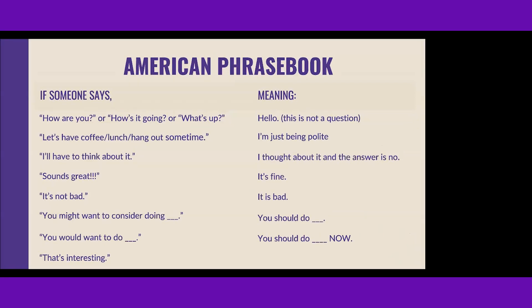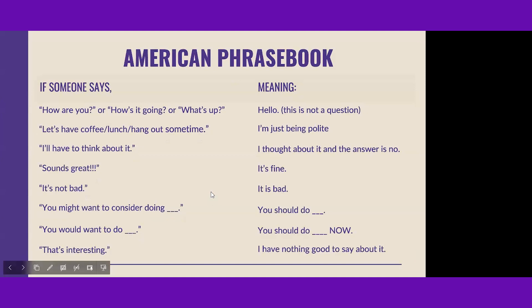The last phrase: 'That's interesting.' This is probably the most controversial one. Tone matters here — it matters for all of these. 'That's interesting' can mean it's not interesting, or it might mean I just don't know what to say. True confession: I've used it when I didn't hear the person and didn't want to ask them to repeat. But 'that's interesting' can also genuinely mean something is really interesting — if you see the person's eyebrows go up and they want to hear more. Context and tone are everything.